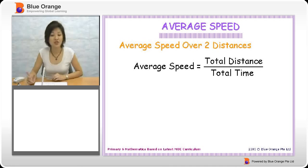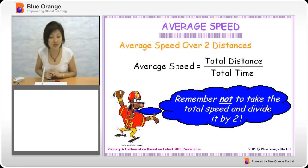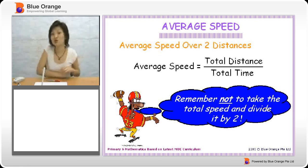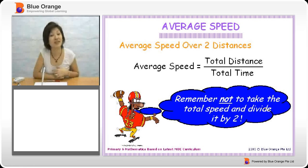Remember, average speed is total distance divided by total time. They were asking you for average speed from town A to town C, so you look for the distance from A to town C and the time from A to town C. Do not take the total speed and divide it by two. You do not have to divide it by two. Remember that, because average speed is all about consistency throughout the whole journey. We are making an assumption here.